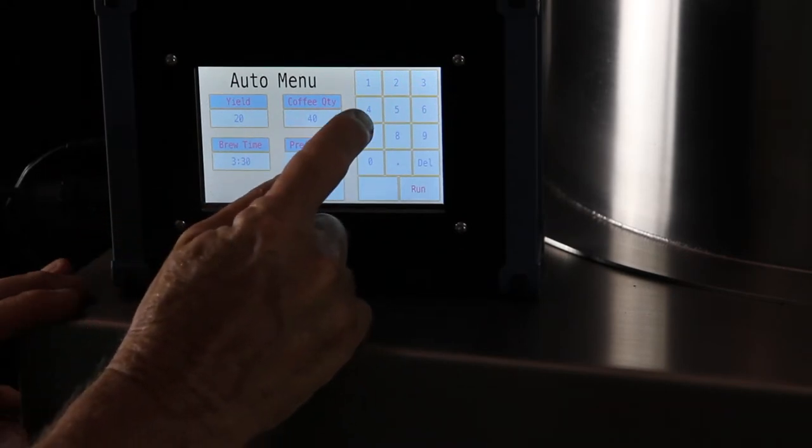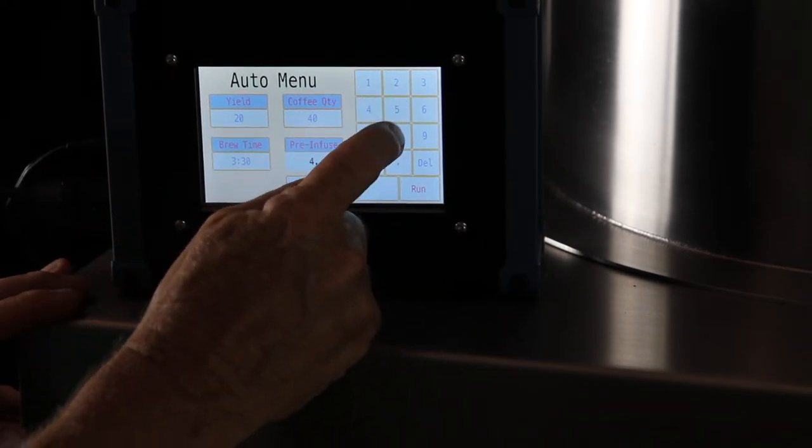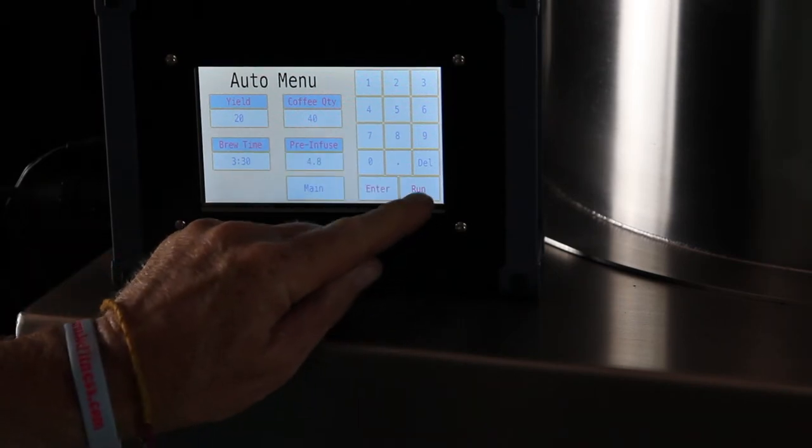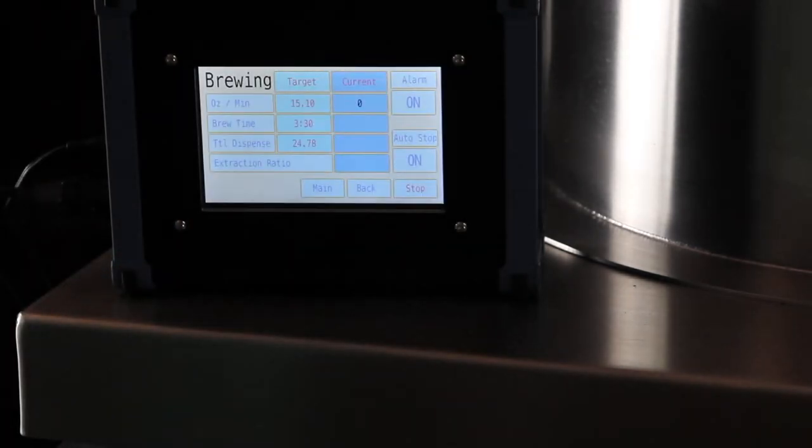Under pre-infuse, say yes and then input the amount of water that you did pre-blend with the coffee grinds. Once everything is input, go ahead and press run.